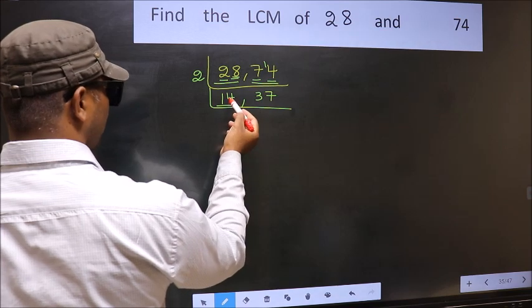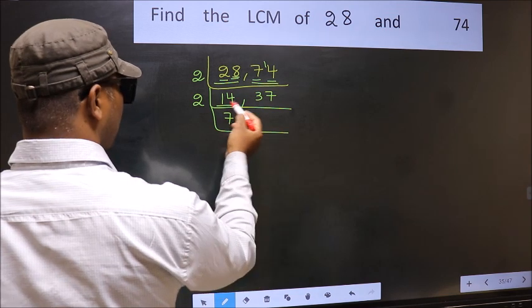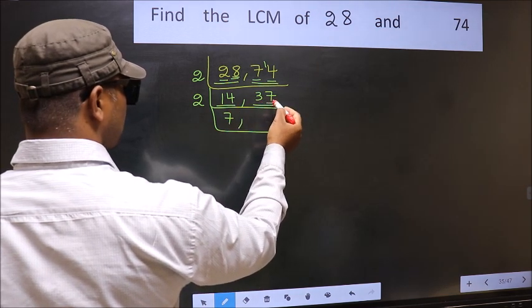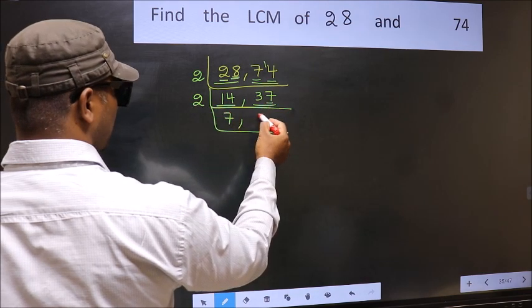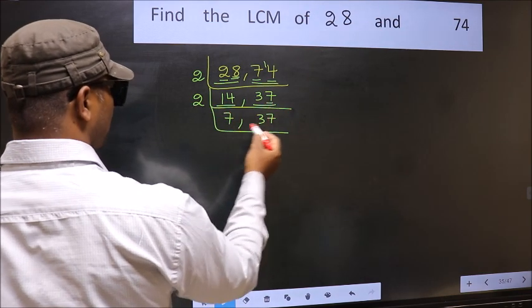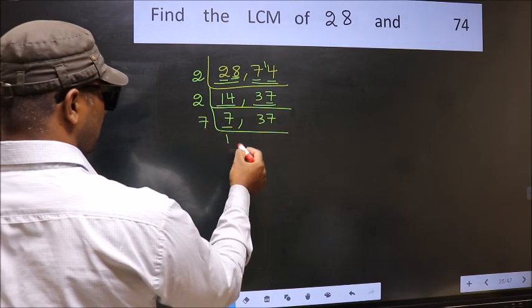Now here we have 14, 14 is 2, 7s, 14. The other number 37, last digit 7, not even, so this is not divisible by 2. So we write it down as it is. Now here we have 7, 7 is a prime number, so 7 ones, 7.